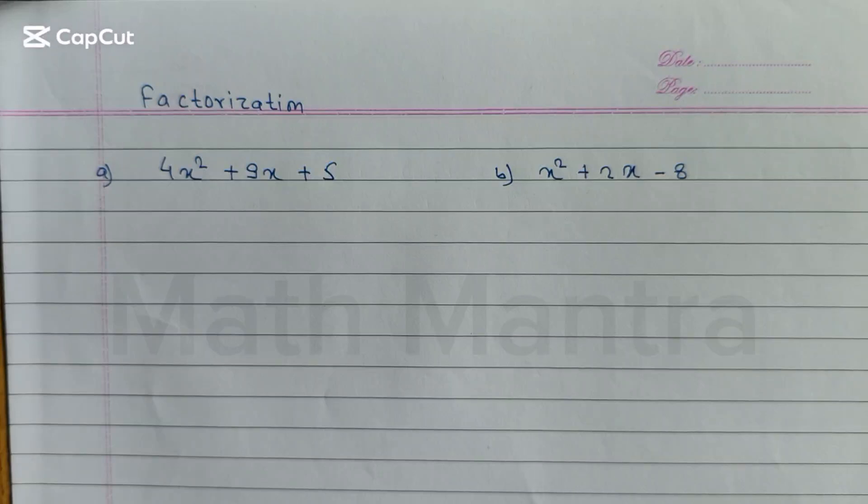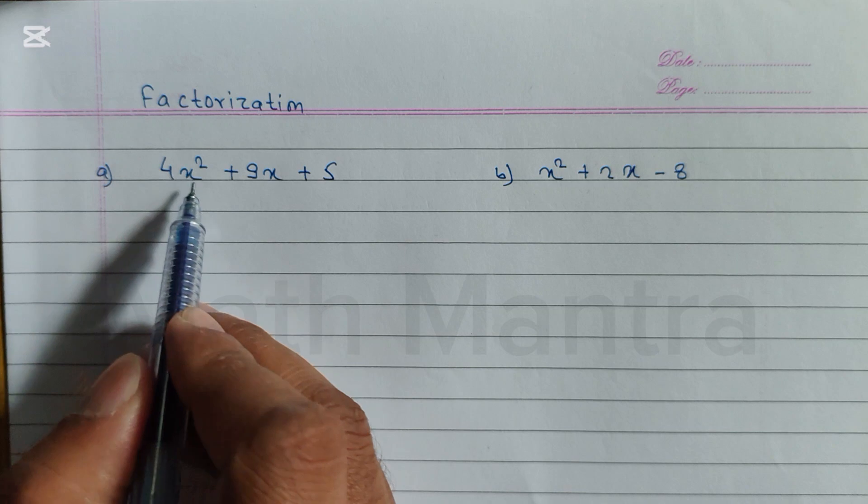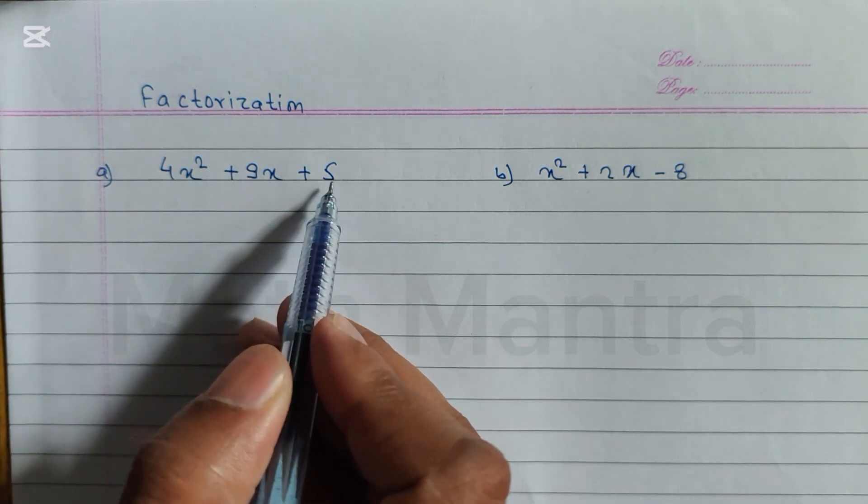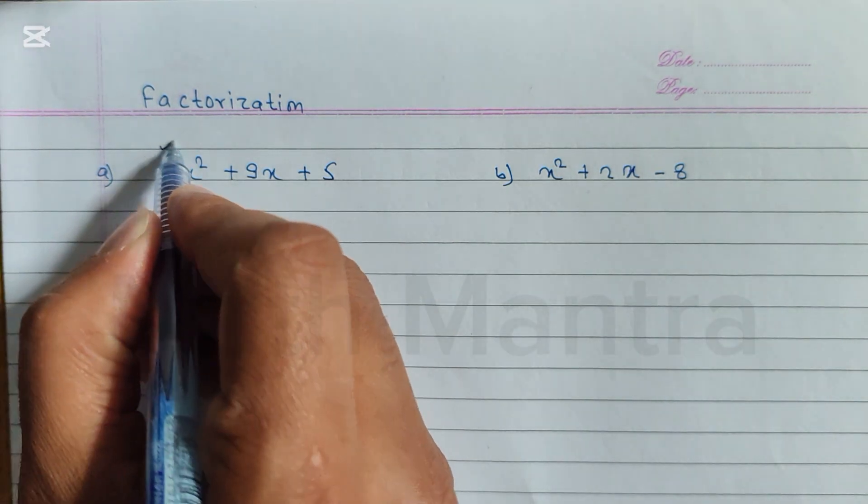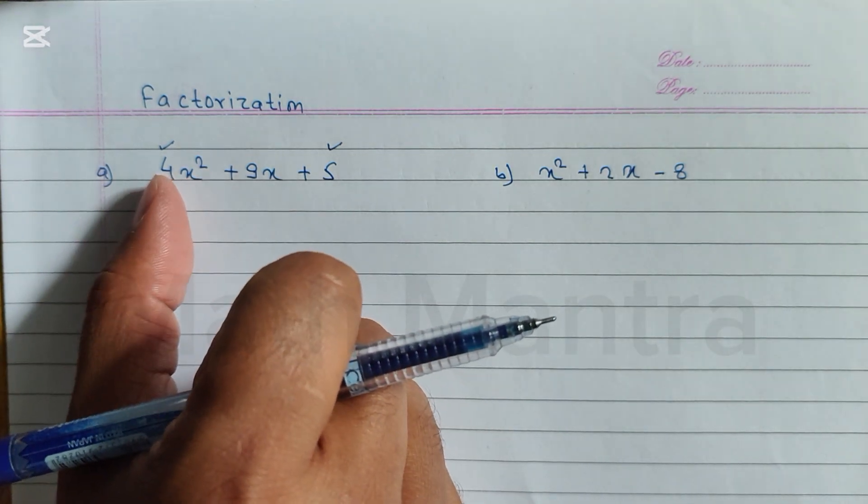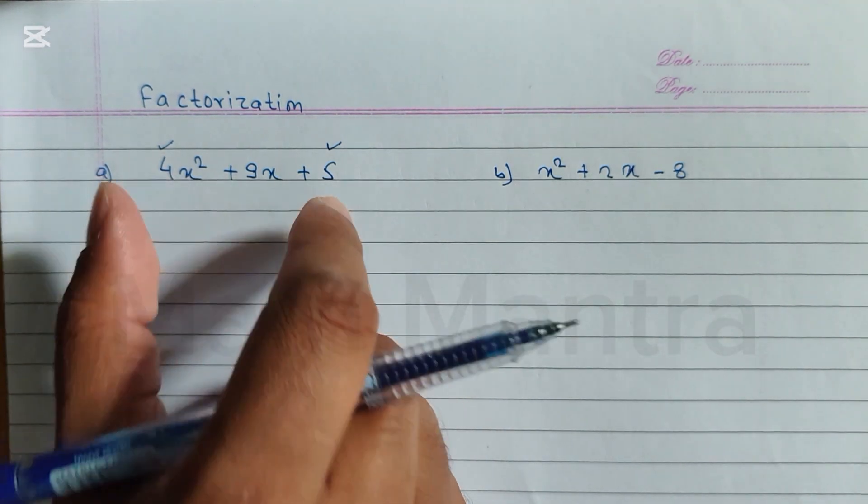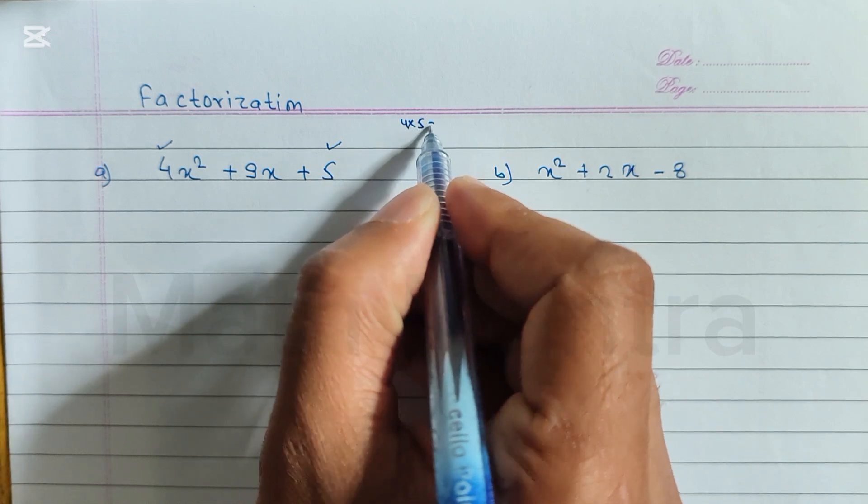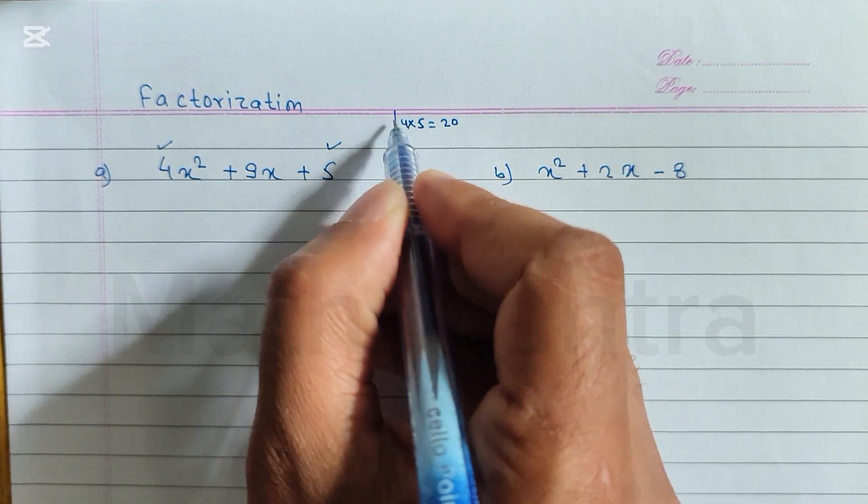Hello everyone, let's learn how to factorize. You can see here question a: 4x² + 9x + 5. First of all, we have to multiply first and last number. The coefficient of x² is 4 and the constant number is 5. We have to multiply 4 into 5, which equals 20.